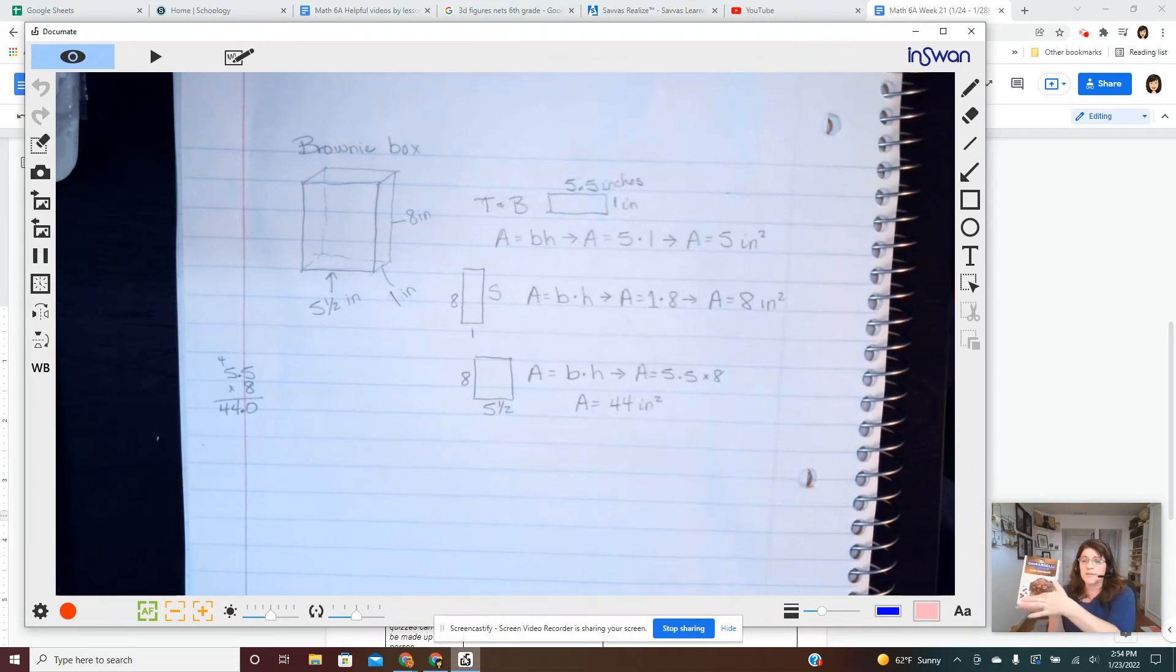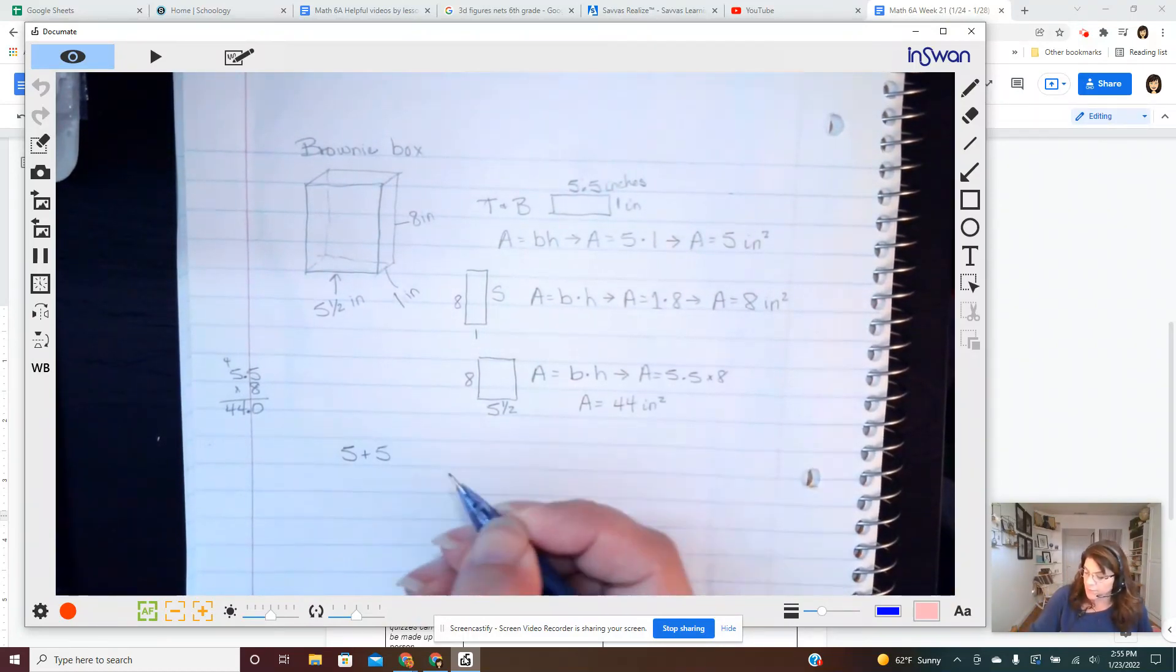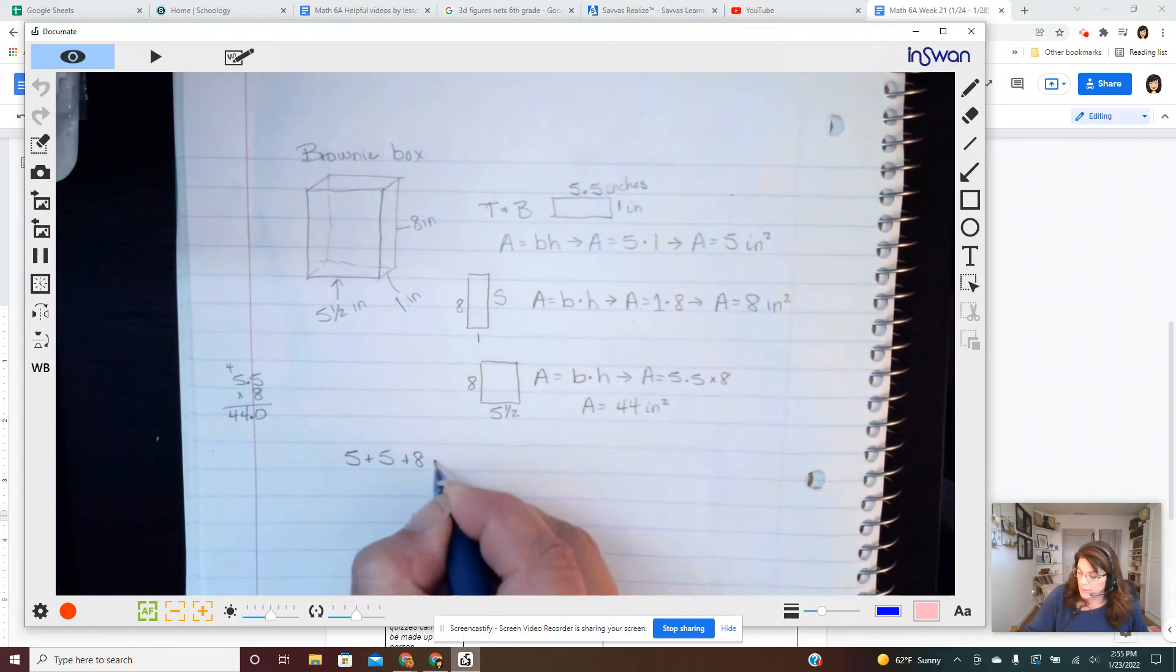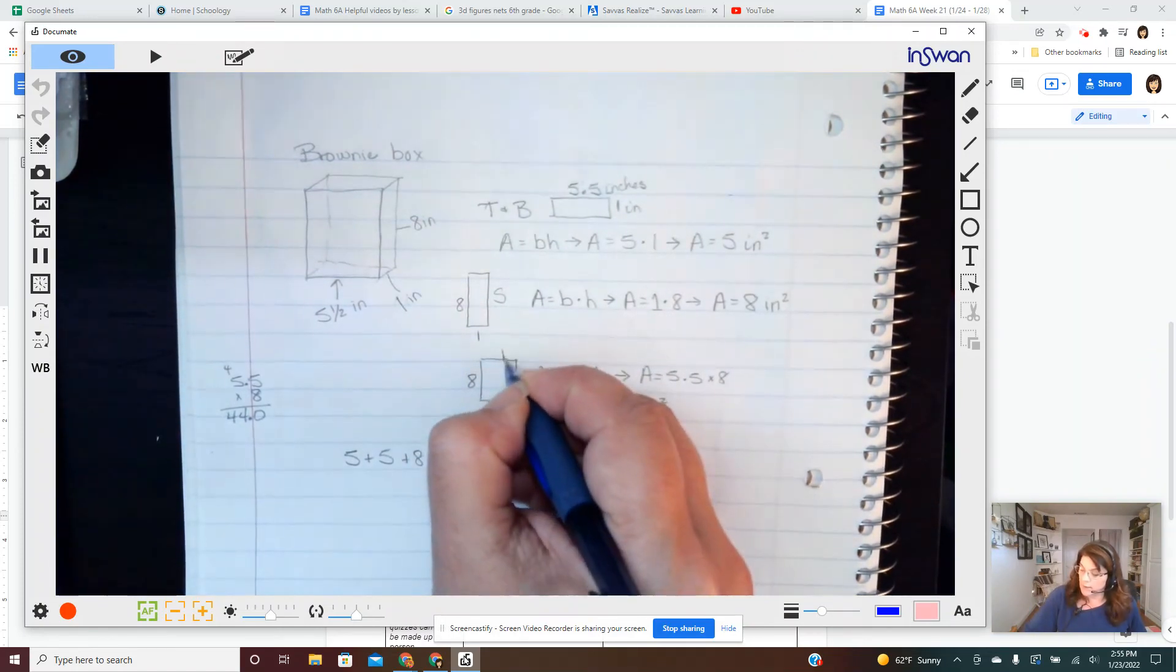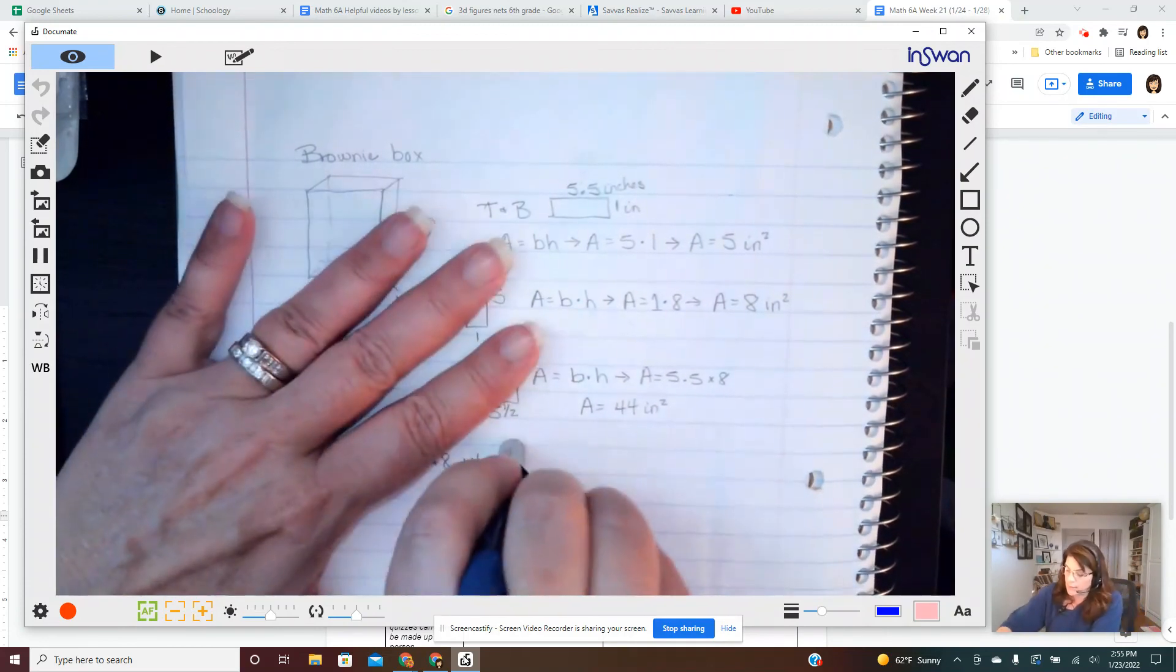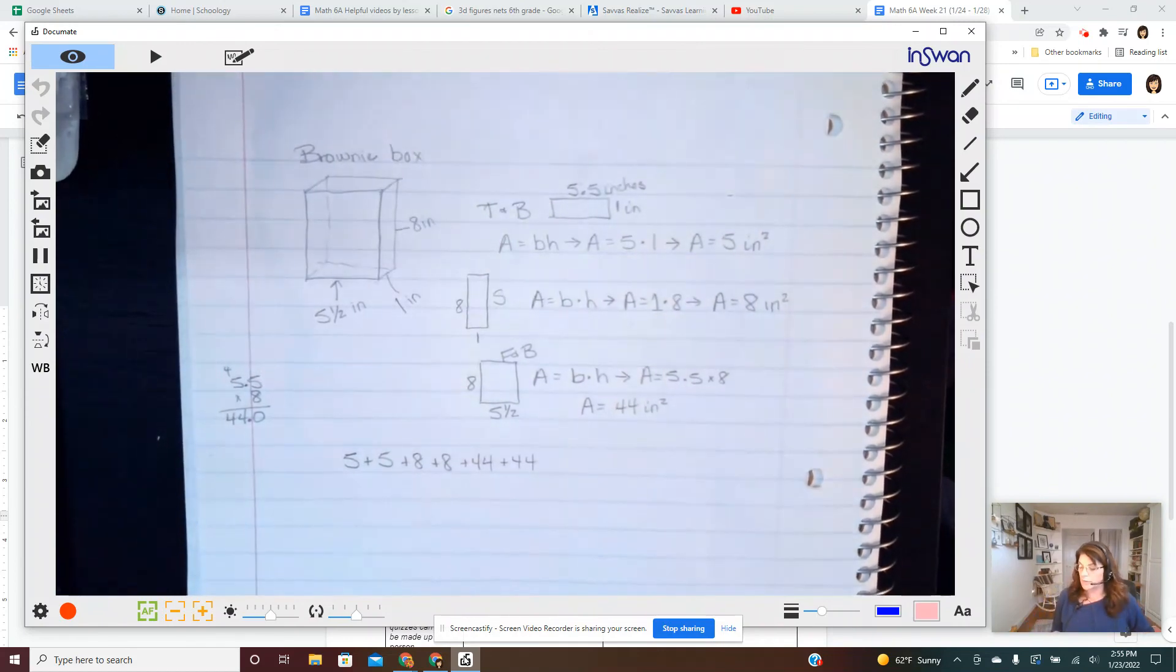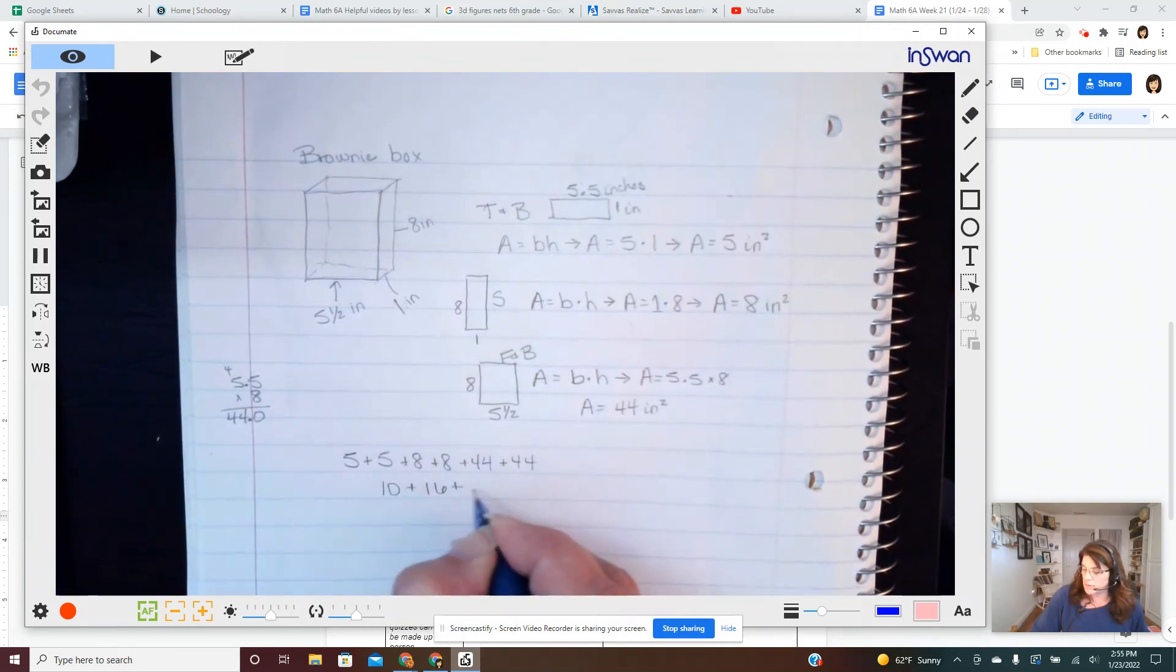Now that's crazy, this is 44 square inches, this little brownie box. But imagine all of it put together. So again you have a top and a bottom, that means five plus five. You have a side and another side, eight plus eight. You have a front and a back, 44 plus 44. 10 plus 16 plus 88.